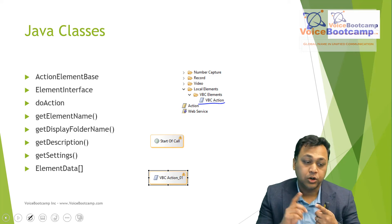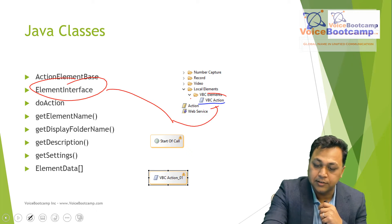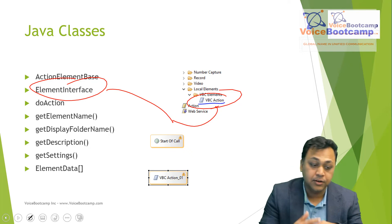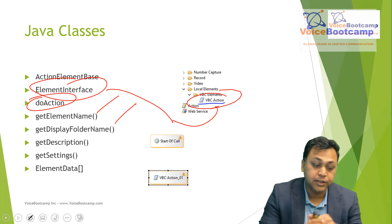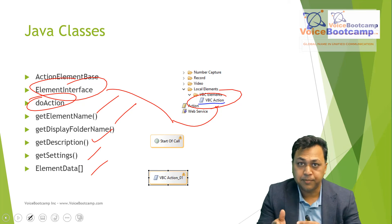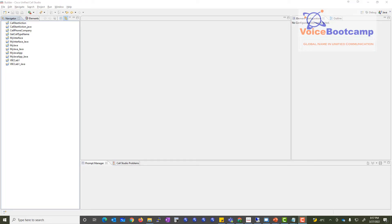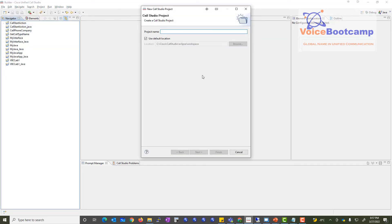We're going to use the element interface, which allows you to create this little element within your tree. This action base API will have various Java class methods like do action, get element name, get display folder name, description, get settings, and element data. I'll walk you through step by step how to get started with your own element. Let's get started — I'll begin by creating a very basic Call Studio project called My Custom Element.